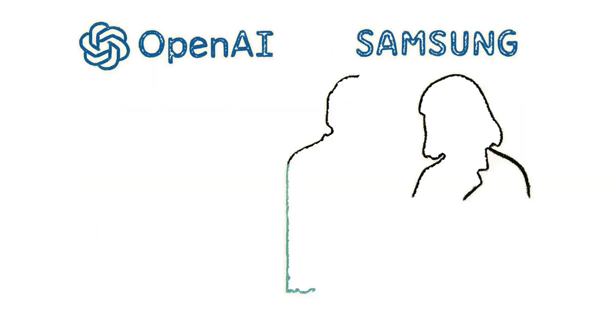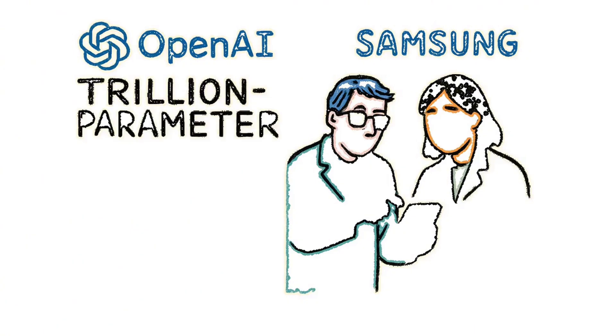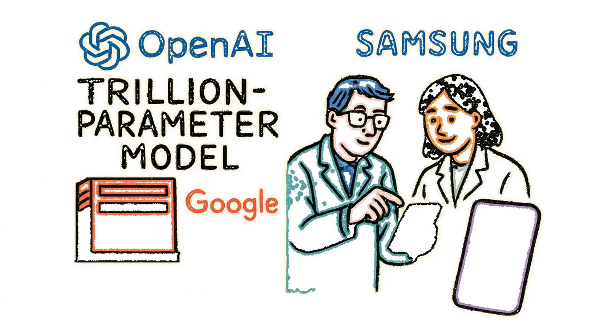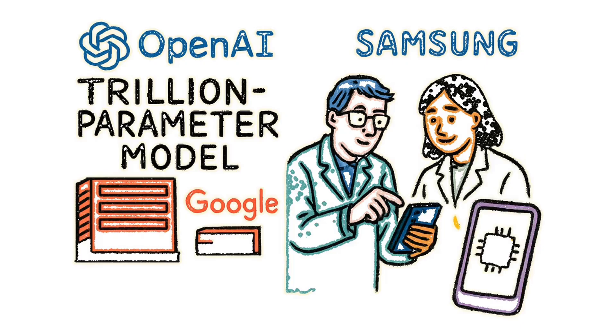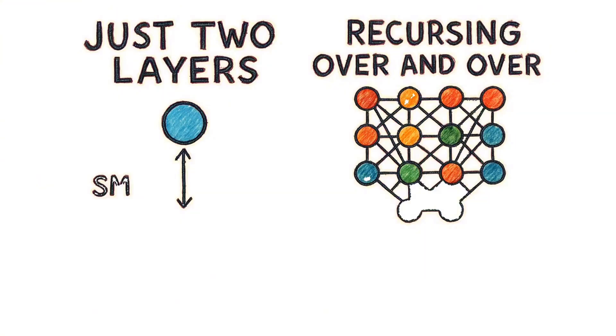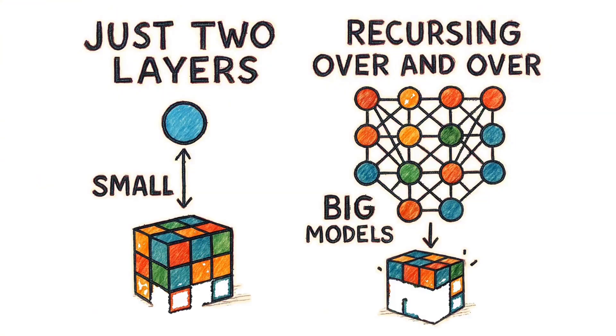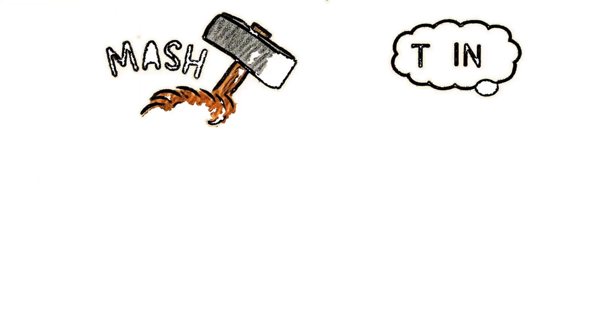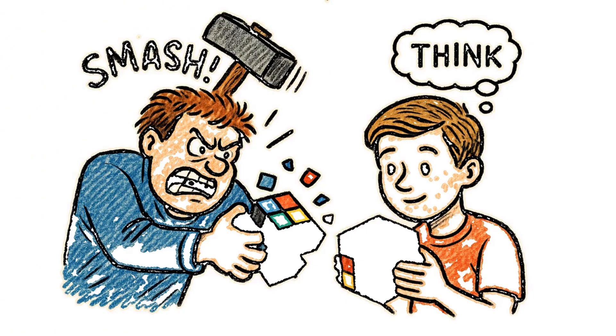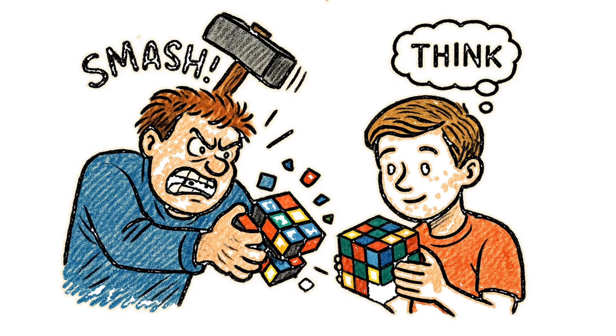Now here's the kicker. While companies like OpenAI and Google are in an arms race to build trillion parameter models that cost hundreds of millions to train, these Samsung researchers just proved you can solve the same hard problems with a model so small it could run on your phone. Two layers. That's it. Just two layers, recursing over and over, while the big models use over a hundred layers and still can't keep up. It's like watching someone solve a Rubik's cube by smashing it with a sledgehammer while this tiny model just thinks its way through.